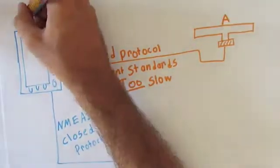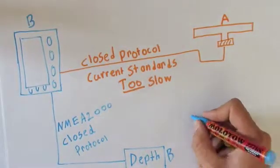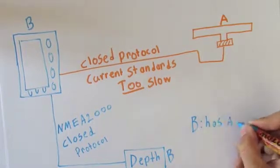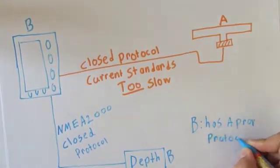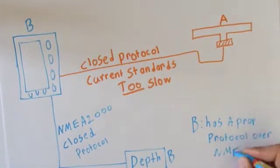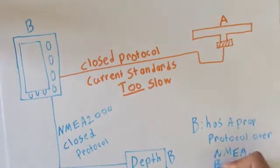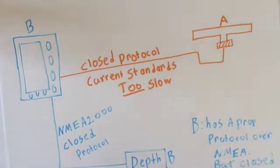Yet, a radar produced by manufacturer A is not able to interact with the multifunctional display produced by manufacturer B due to the closed protocols as well as the standards which are not able to support such a high bandwidth.